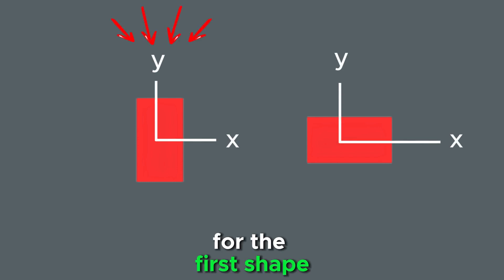For the first shape we calculated the value about the x-axis. As you can see, the mass is distributed further from the axis, which is why it has a greater resistance to rotational motion.